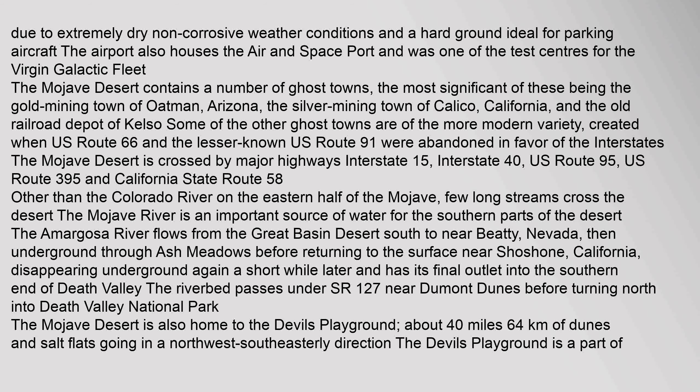Other than the Colorado River on the eastern half of the Mojave, few long streams cross the desert. The Mojave River is an important source of water for the southern parts of the desert. The Amargosa River flows from the Great Basin Desert south to near Beatty, Nevada, then underground through Ash Meadows before returning to the surface near Shoshone, California, disappearing underground again and having its final outlet into the southern end of Death Valley. The Mojave Desert is also home to the Devil's Playground, about 40 miles from the Mojave National Preserve, located between the town of Baker, California and the Providence Mountains. The Cronise Mountains are found within the Devil's Playground.